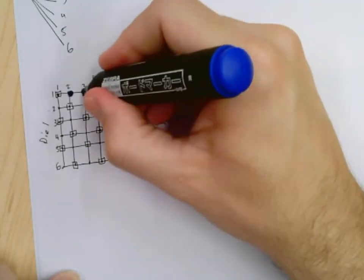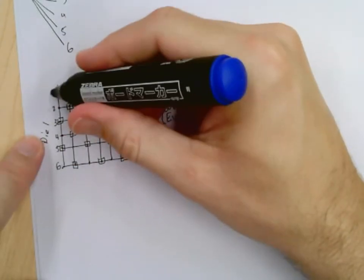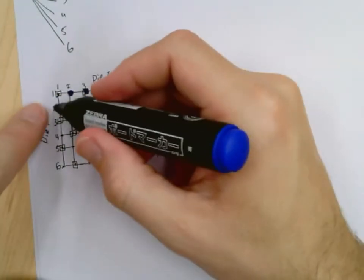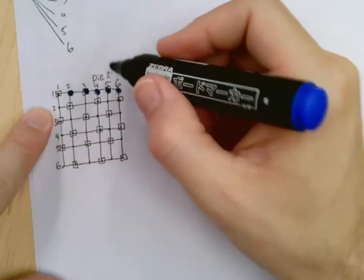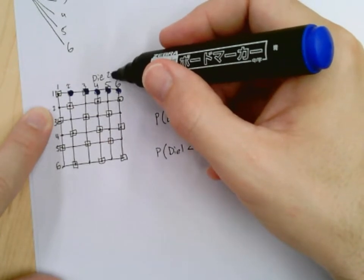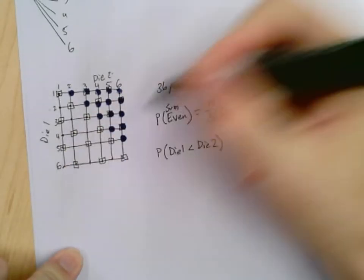For all of these, die two is two, three, four, five, six. Die one is one. Look at the next row. If die one is two, then it will be less than die two when die two is three, four, five, or six. When die one is three, then die two can be four, five, or six. Again, you're probably starting to see a pattern. And there we go.